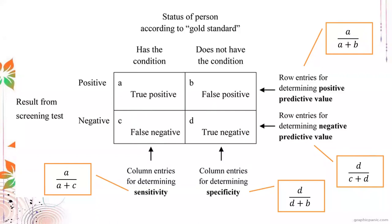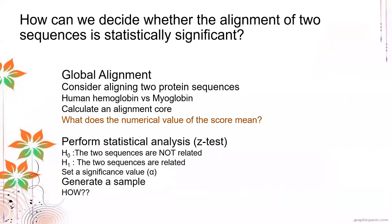For global alignment, if we align two protein sequences and get an alignment score, how do we know if that score is statistically significant? We can perform a Z-test. The null hypothesis is that the sequences are not related; the alternative is that they are. Since we have only one score from one alignment, we need bootstrapping to generate more than one sample — for example, querying a large number of unrelated proteins, generating random sequences, or randomly scrambling sequences to compare to the query.